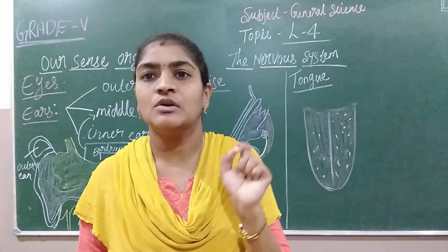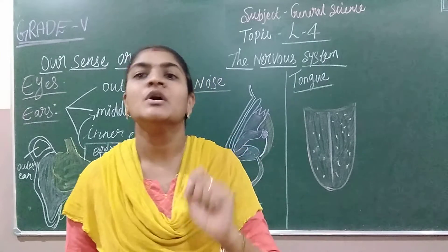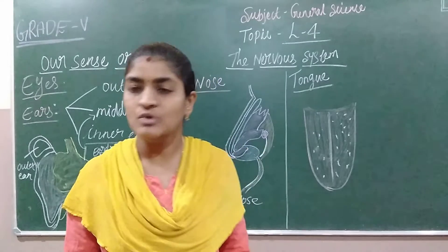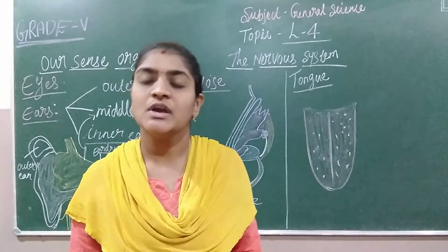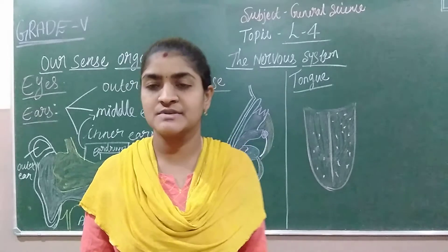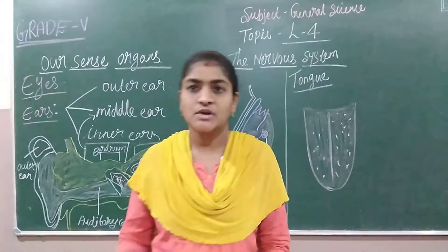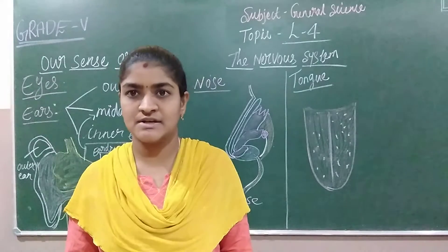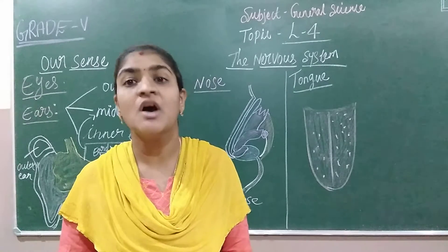The neuron looks like a long thread-like structure. It will be helpful to transport the signal from one part to another part. We have also seen different types of nerves — sensory nerve, motor nerve, and mixed nerve. These are the three types we have studied.